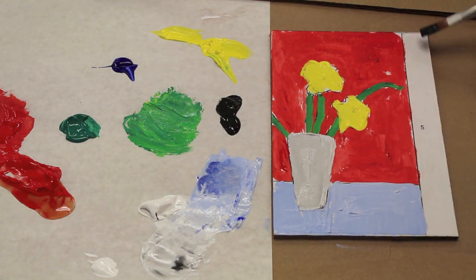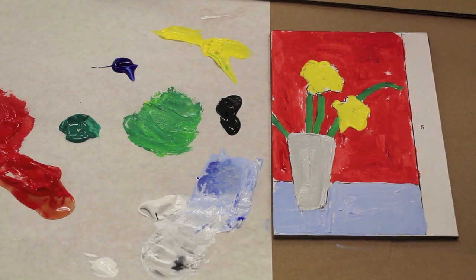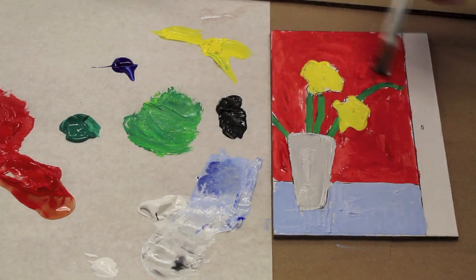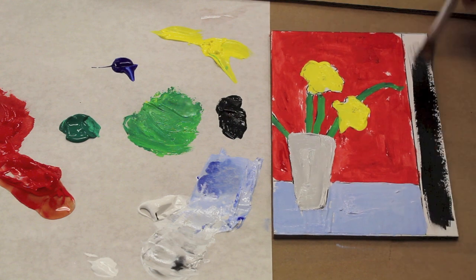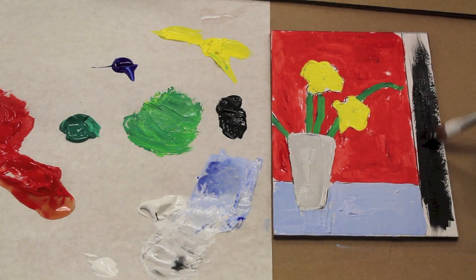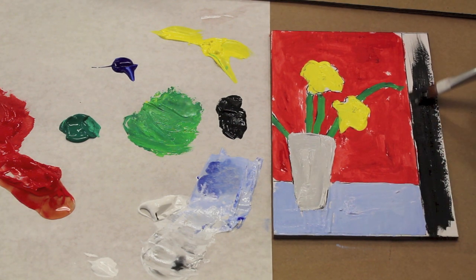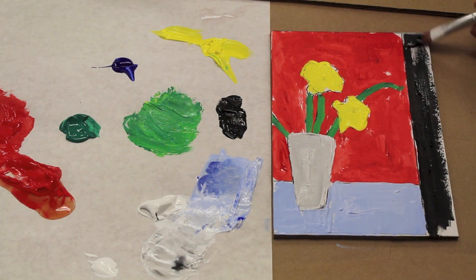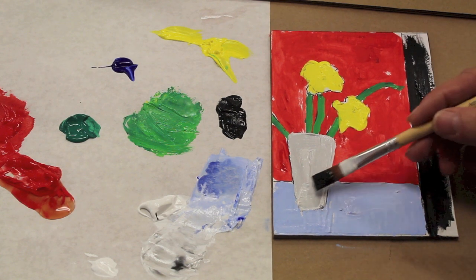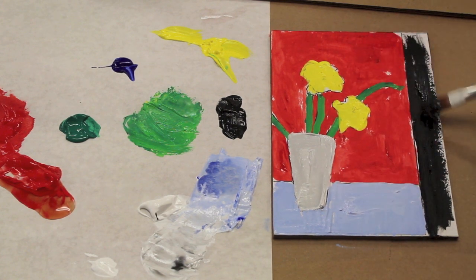This little part here, in my view, maybe represents a wall, and what it does is it defines space. So I'm going to paint this black, and what happens then is you immediately have a foreground. So this is the foreground, this is the mid-ground, and the red is the background.